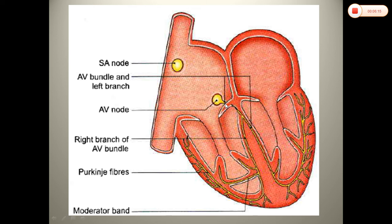The Atrio-Ventricular node descends and the ventricle is divided into the right and left bundle branches. The right bundle branch descends along the ventricular septal wall on the right side. It then passes through the moderator band in the right ventricle.